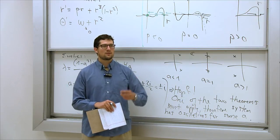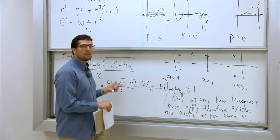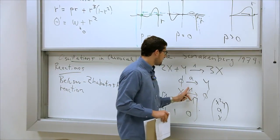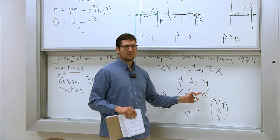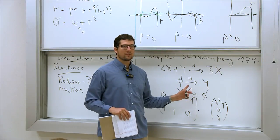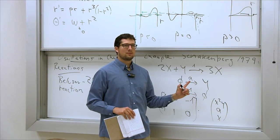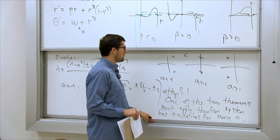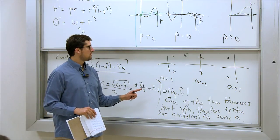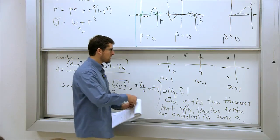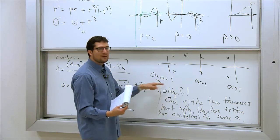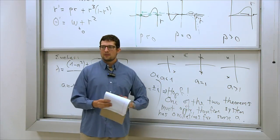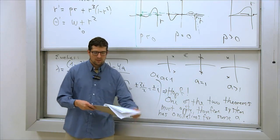Someone asks: can a be zero or negative? Mathematically there's no reason why not, but remember these are rates of chemical reactions, so a negative a would be physically funny. A equals zero would be fine though. For a between zero and one, the real part of the eigenvalues is positive. Someone notes this should be clarified for a slightly less than one — yes, that's what was stated. One of the two Hopf theorems must apply, showing oscillations for some values of a. See you next time.